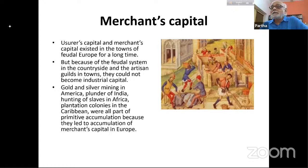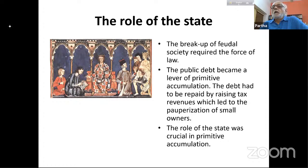Wealth accumulated in this whole period of transformation through gold and silver mining in America, the plunder of India, the hunting of slaves in Africa, and plantation colonies in the Caribbean — all of this contributed to primitive accumulation because it led to the accumulation of merchants' capital in Europe.